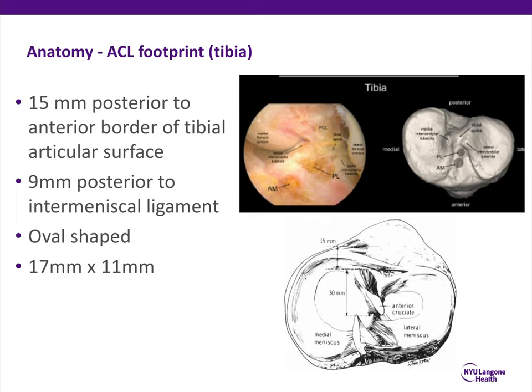In terms of the tibial anatomy, it's about 15 millimeters posterior to the anterior border of the tibial articular surface, and about 9 millimeters posterior to the intermeniscal ligament — that's in terms of the center of the ACL footprint. This is an oval-shaped footprint on the tibia and it's longer than it is wider: about 17 millimeters long and about 11 millimeters wide from medial to lateral, as shown in good studies by Ferretti.